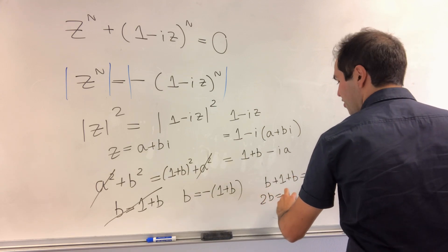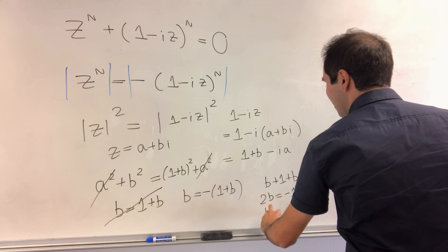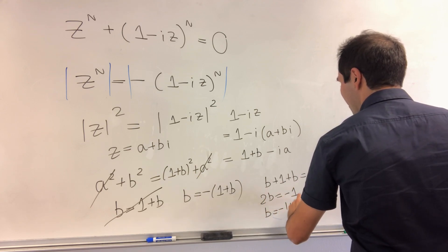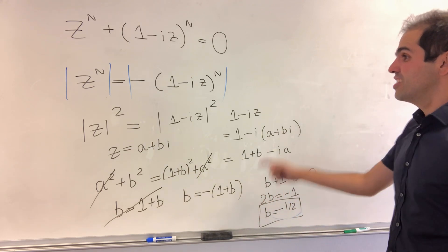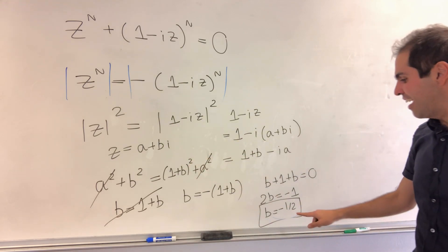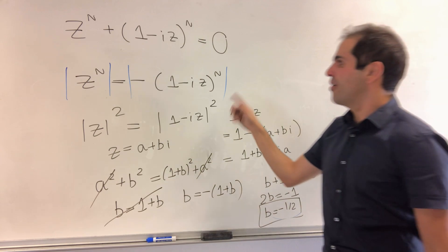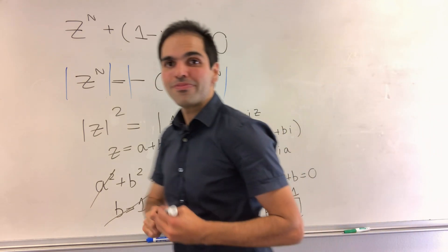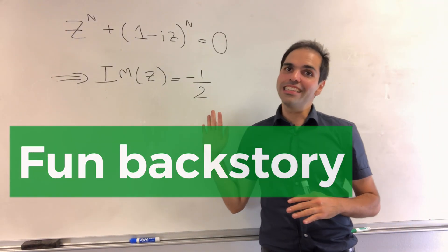And so what we get is b plus 1 plus b equals 0. So 2b or not 2b is minus 1. So b is minus 1 half, which is just what we wanted. We wanted to show that if z equals a plus bi, then the imaginary part is minus 1 half.